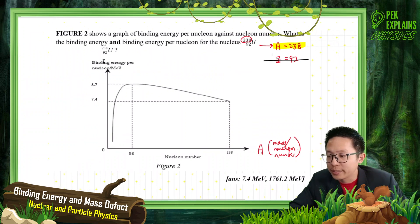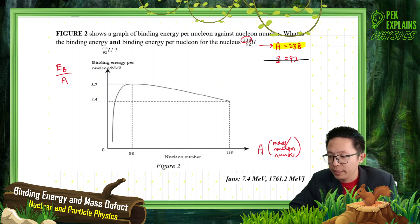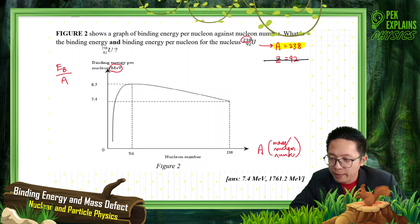And then, how about the y-axis? Y-axis is the binding energy per nucleon. Means it is a binding energy per nucleon. If you look at here, this one in MeV. MeV, that means the unit here is MeV.